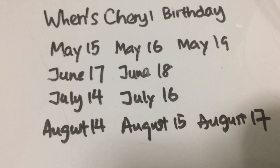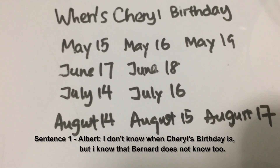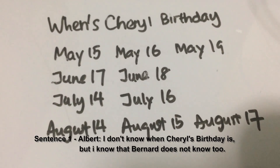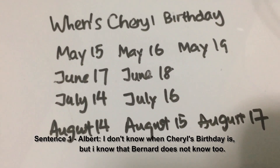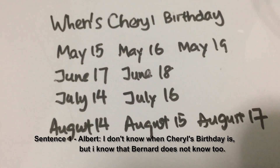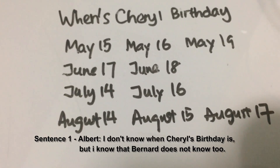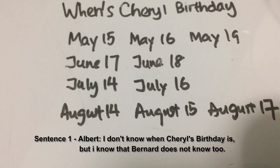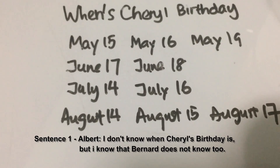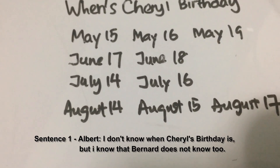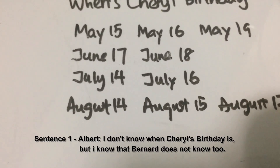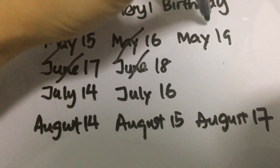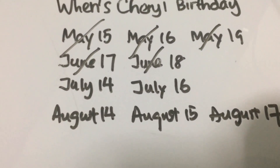So the first thing that Albert says is that he does not know when Cheryl's birthday is, but he knows that Bernard does not know too. The fact that Albert knows Bernard doesn't know means the date Bernard got is not a unique date — which means 18th and 19th are not possible dates. And if Bernard knew the date itself, he'd know the month, so May and June cannot be the answer. Hence we narrow it down to August and July.